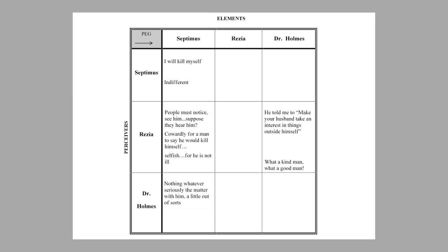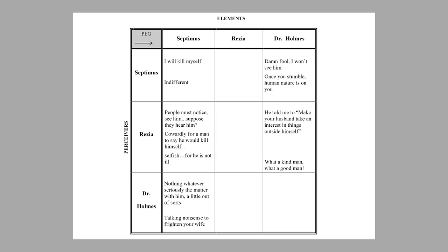Septimus, for his part, says of Dr. Holmes, 'He's a damn fool. I won't see him.' And then: 'Once you stumble, human nature is on you.' That comes through in all three of the PEGs. He seems to have an idea — and I can't but think it's connected with his wartime experiences. Soldiers would come back from the trenches and never tell their families anything for the rest of their lives. He's got this idea that if you stumble, if you show a weakness, then people will grind you down and oppress you even more.